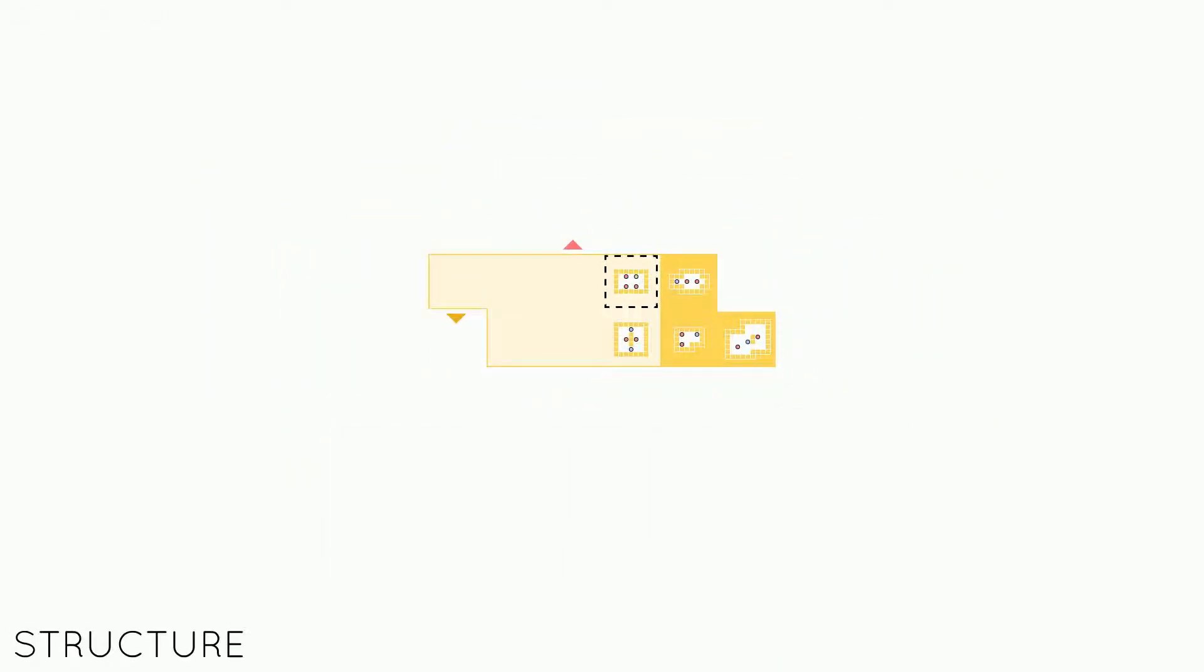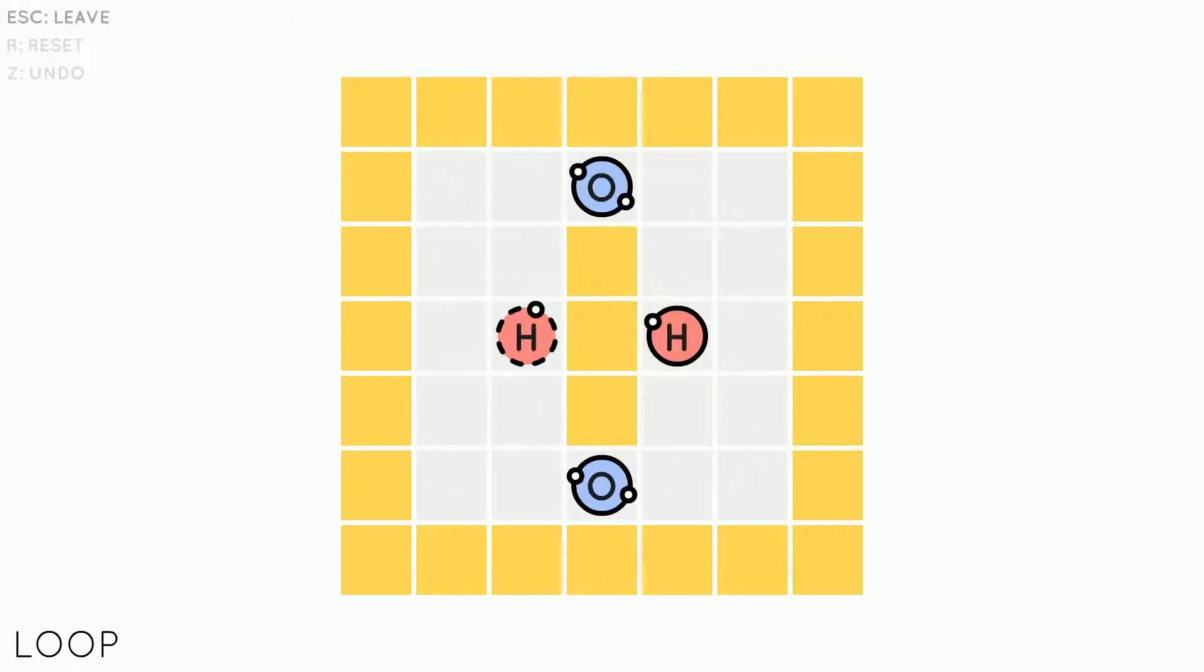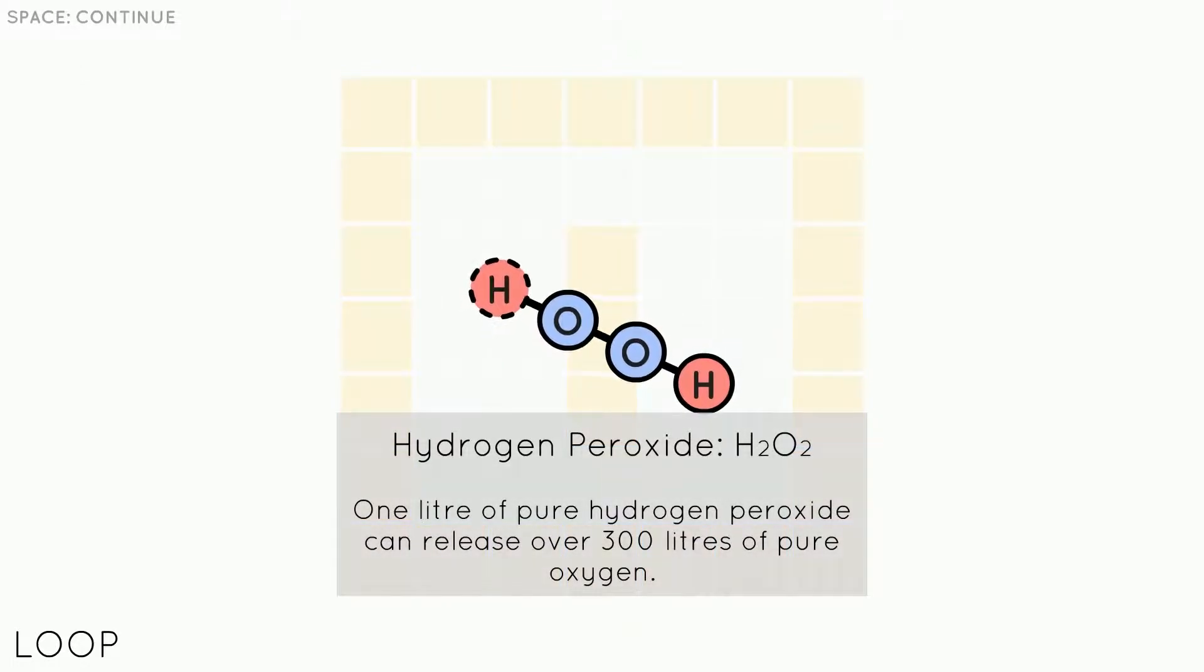The more you know. Who, that brings in three hydrogen one something or other. So let's go make something deadly. Let's see. Dude, all right I guess all the controls are escape to leave, R to reset and Z to undo. H2O2, hydrogen peroxide. One liter of pure hydrogen peroxide can release over 300 liters of pure oxygen. Wow, that's wow. H2O2 is hydrogen peroxide.